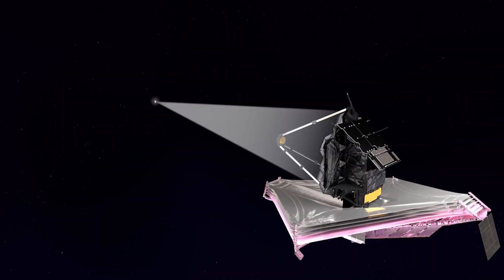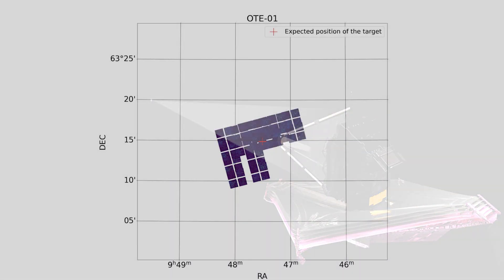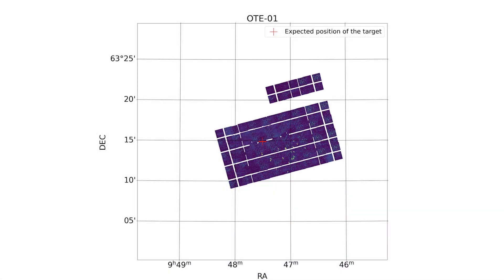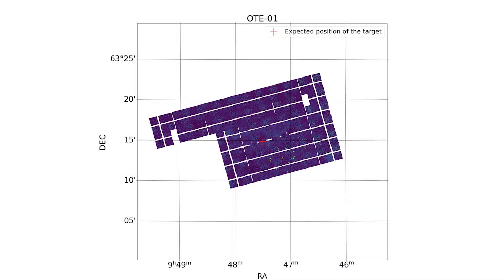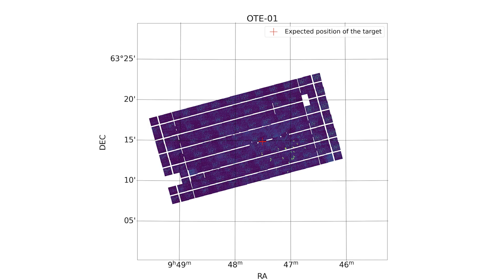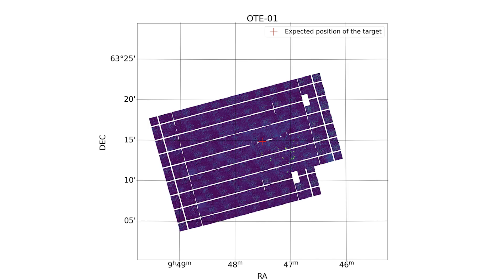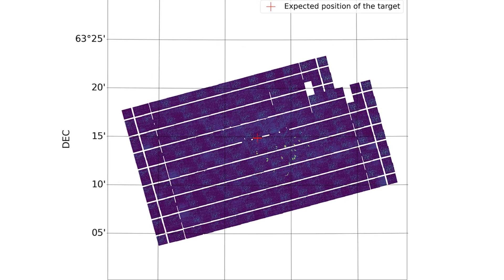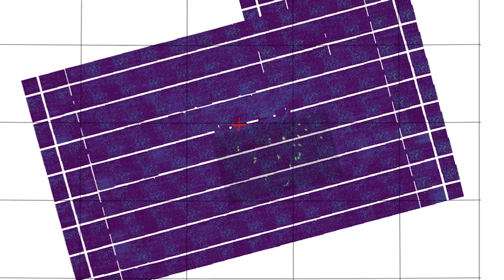We pointed at a bright star and made a mosaic. We took the near infrared camera and took images in different parts of the sky. Then we looked for the 18 spots from the 18 different telescopes, if you will, and we were very excited to find them.